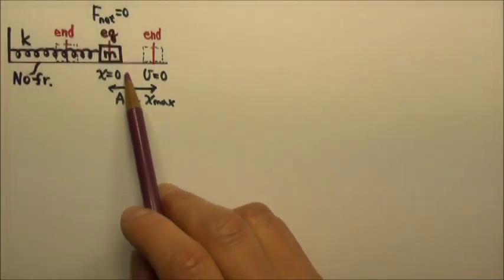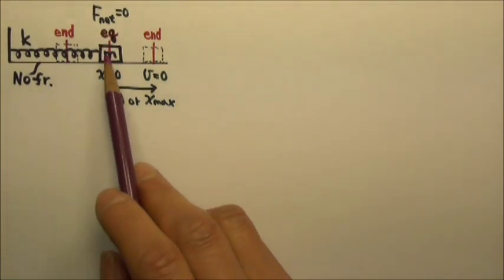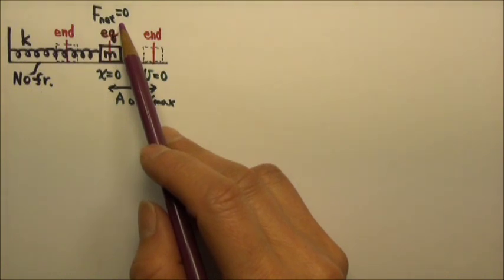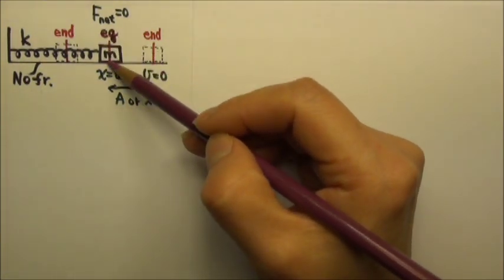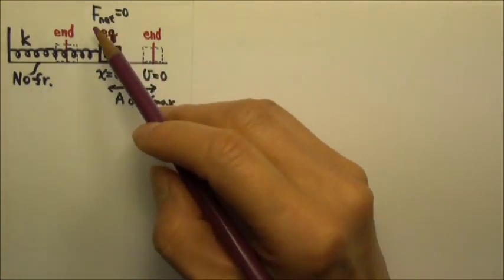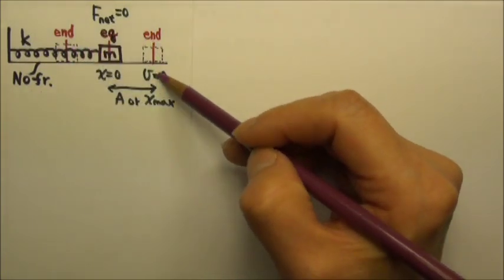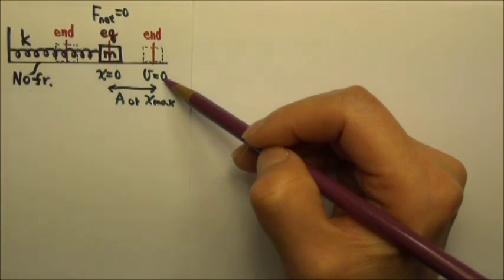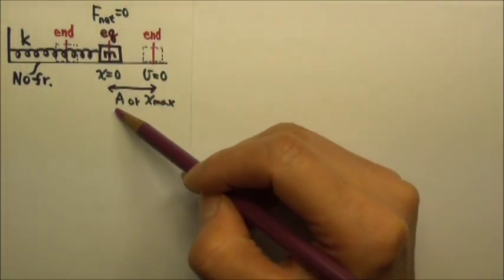The basic simple harmonic oscillator is a spring-mass system with no friction. The equilibrium position means the net force on the box is zero — the spring is relaxed and x is zero. The box oscillates between two endpoints, and the speed at each endpoint is zero because it is a turning point. The distance between the equilibrium and the endpoint is what we call the amplitude.